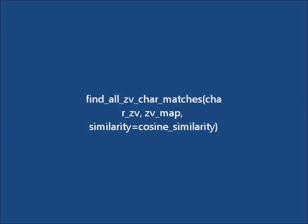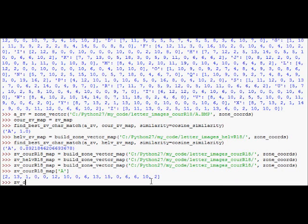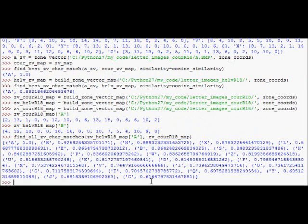And finally, we will implement find all zv character matches. It is similar to find best zv character match, but it will return the sorted list of matches, of all the matches from largest closest to smallest. So let's say we have, this is our zone vector Helvetica zone vector for character B. And I'm going to try to find all zv character matches for zv Helvetica R18 map. Alright, this is, so for the zone vector of Helvetica R18 A, character A, in the zone vector of the courier characters. So that's A, that's good. So we are, we're good.